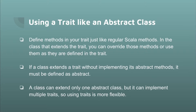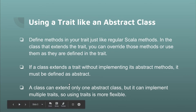Using a trait like an abstract class: we can define methods in our trait just like regular Scala methods, as seen with the 'speak' method. In a class that extends the trait, you can override those methods or use them as defined in the trait. If a class extends a trait without implementing its abstract method, it must be declared abstract. A class can extend only one abstract class but can implement multiple traits, making traits more flexible. How to implement multiple traits will be covered in the next lesson.